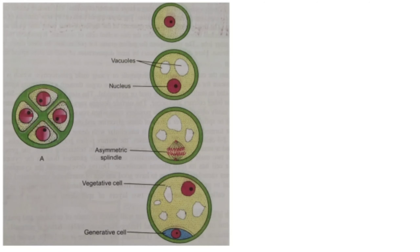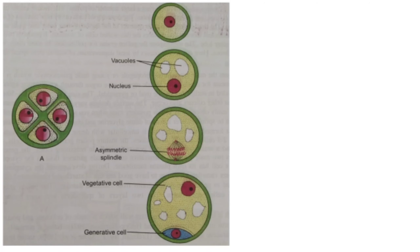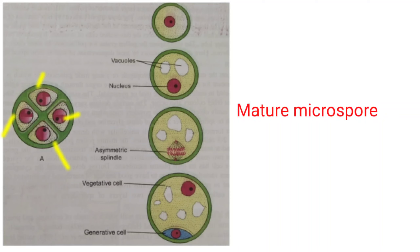Here you can see the microspore tetrads. After formation through meiotic division, the microspore tetrads rupture, and from each microspore tetrad four microspores are produced. This is a very important point to remember.